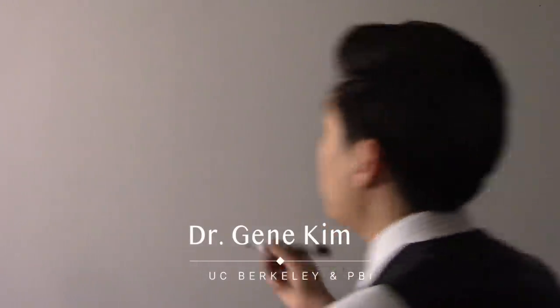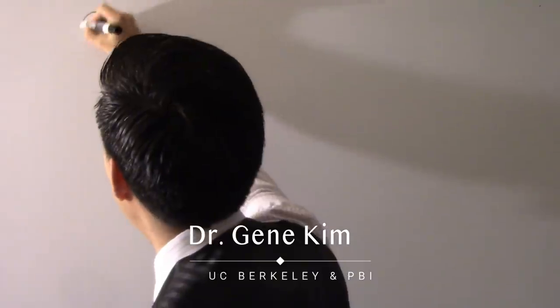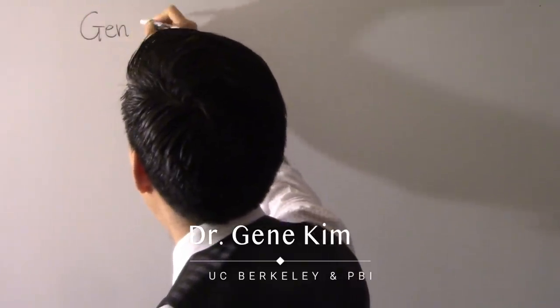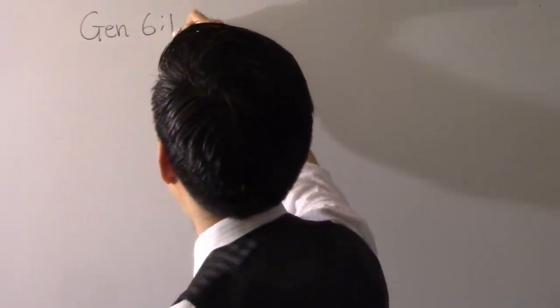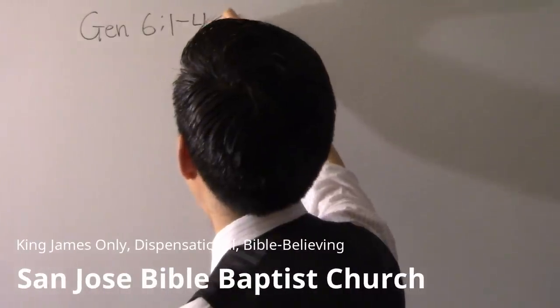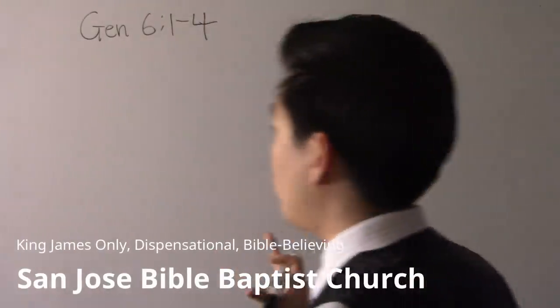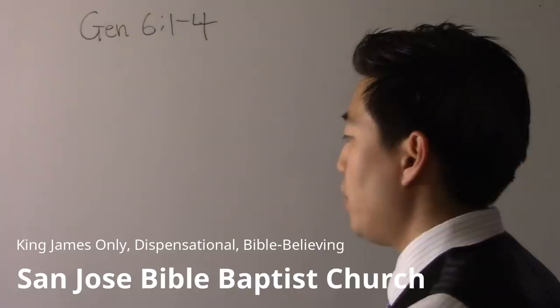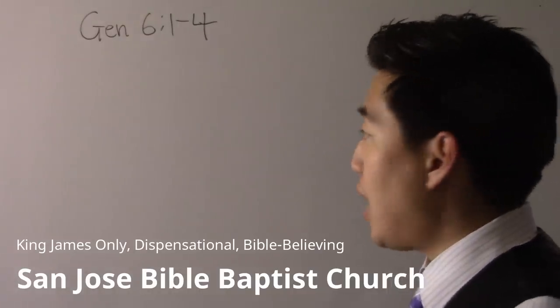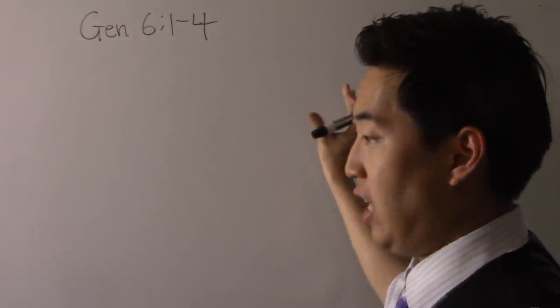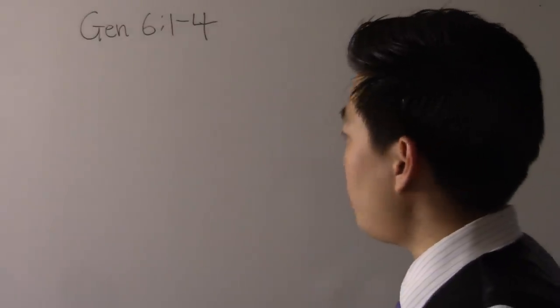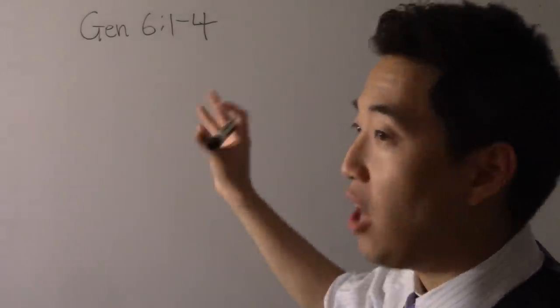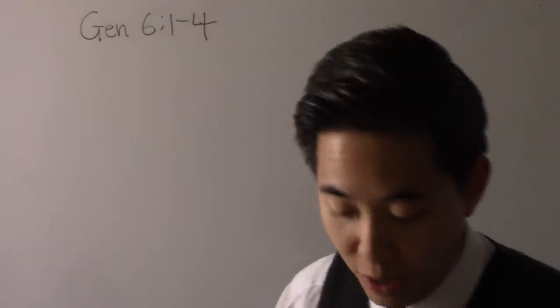I explained in a previous video that in Genesis 6 we believe giants are the offspring of the sons of God. Now there are people who have a hard time believing that, so they will try to deny this argument. I'm going to talk about the remnant of the giants and add a little bit more apologetics here.